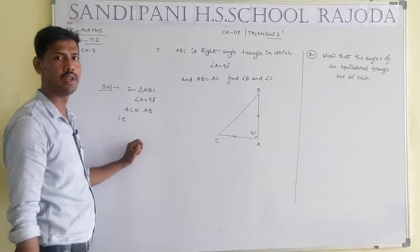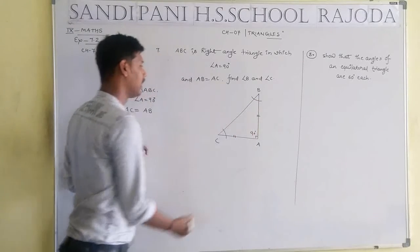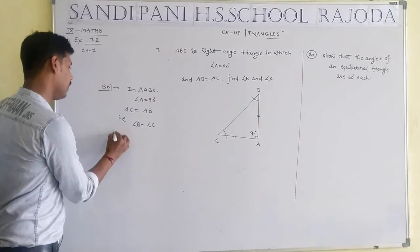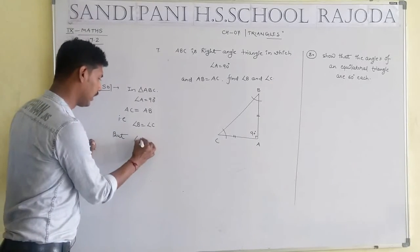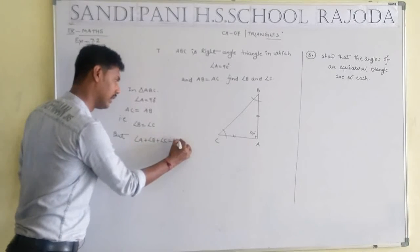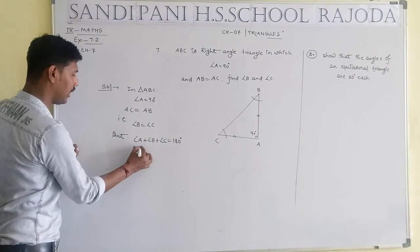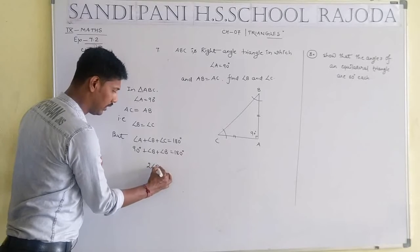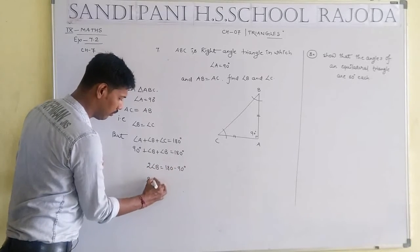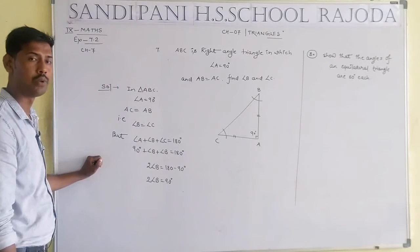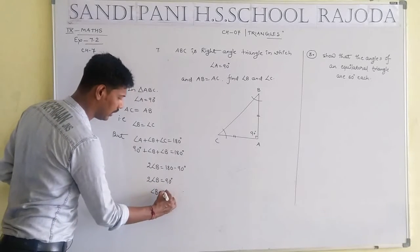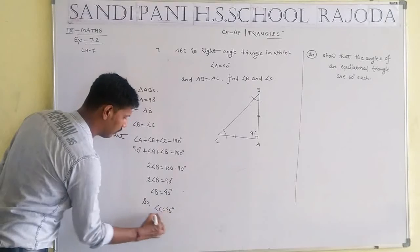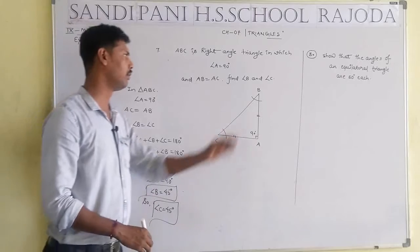Solution: In triangle ABC, angle A equals 90 degrees and AC equals AB. Since two sides are equal, the corresponding angles are equal, so angle B equals angle C. The sum of all angles in a triangle is 180 degrees: 90 plus angle B plus angle C equals 180. Since B equals C, we get 2 times angle B equals 90, so angle B equals 45 degrees. Similarly, angle C equals 45 degrees.